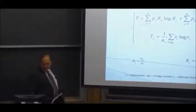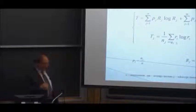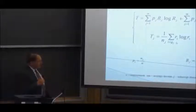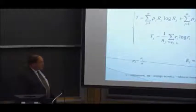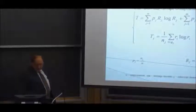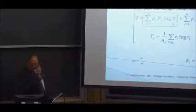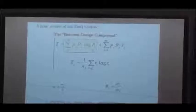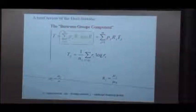The Theil statistic basically is a generalized entropy statistic. It has a component within groups, which is based upon the average income of each individual relative to the group average, divided by the number of individuals in the group.